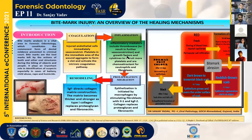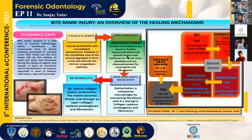After that, proliferation and migration start. Epithelialization is initiated by macrophages, which stimulate fibroblasts with interleukin-1 or keratinocyte growth factor-2. Collagen then replaces the proteoglycan and fibronectin.